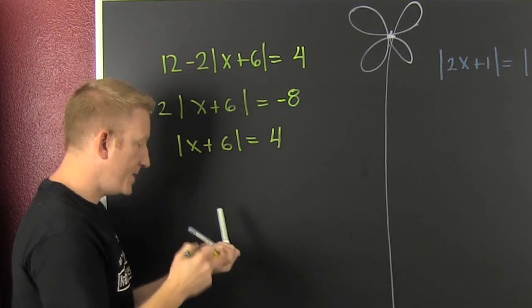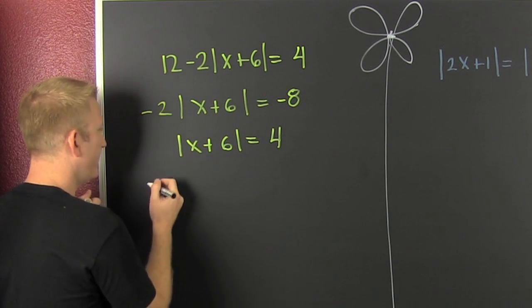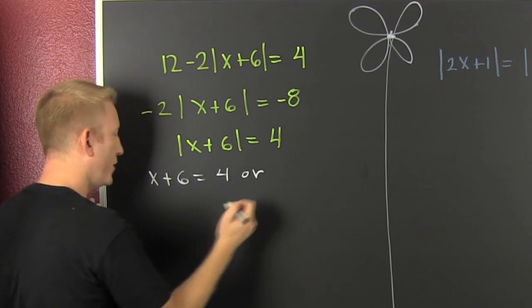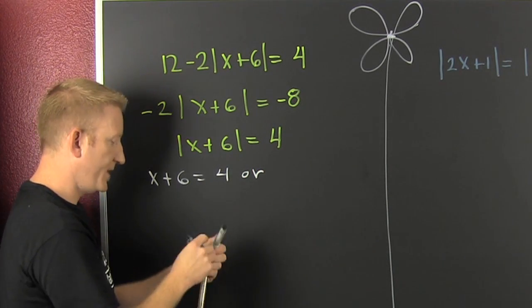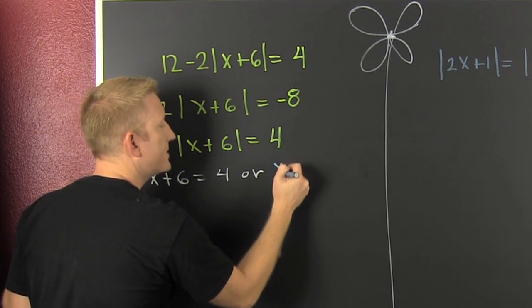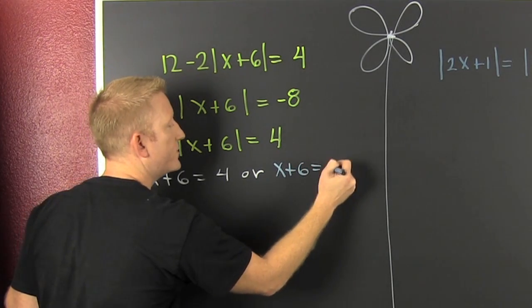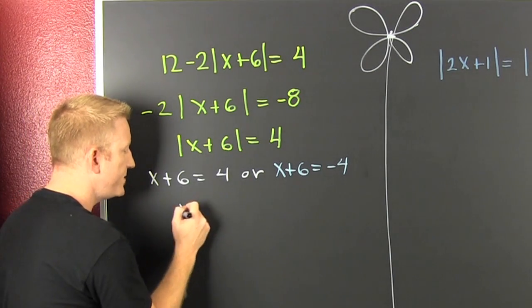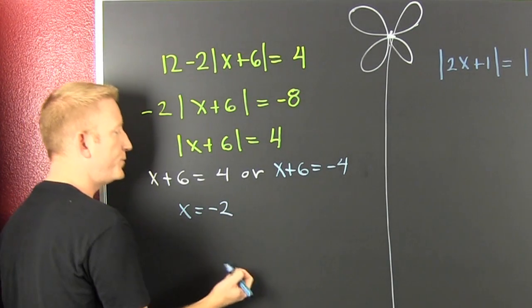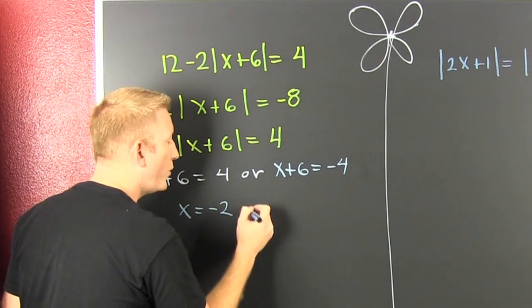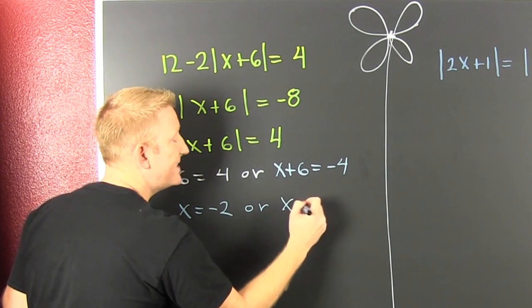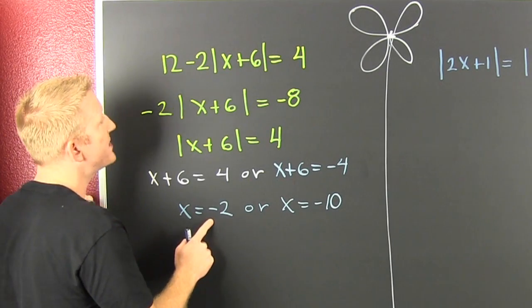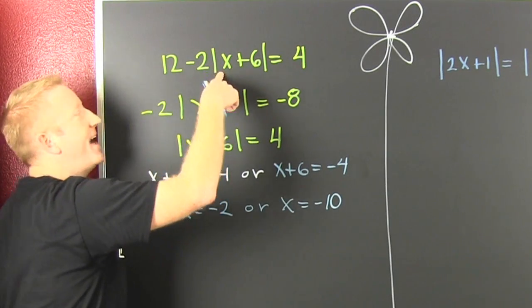So now we break it up into the two cases: one where x plus 6 is equal to 4, or the opposite, where x plus 6 is equal to minus 4. You subtract the 6 off both sides and you see that x is going to be minus 2, or x is equal to minus 10. Then go throw this back into the original to see if it works out.